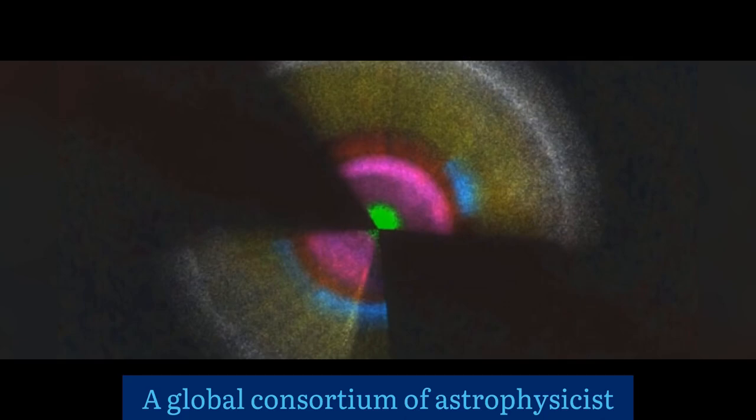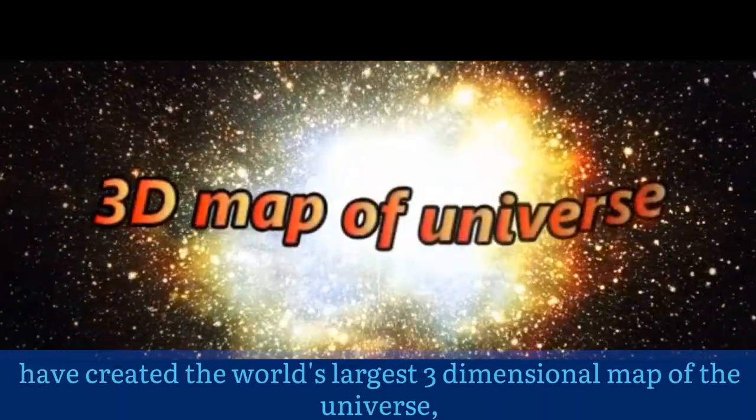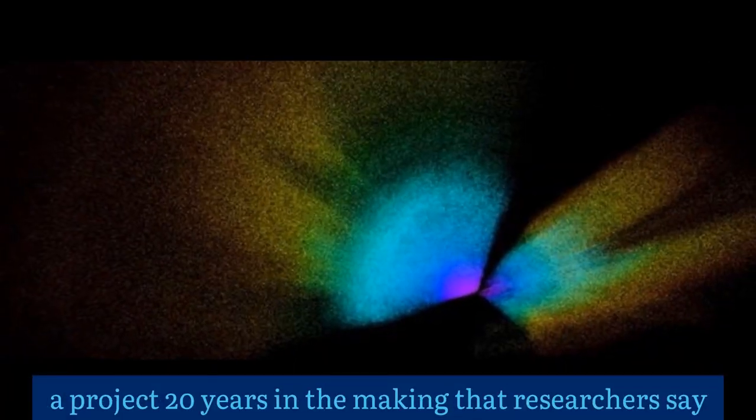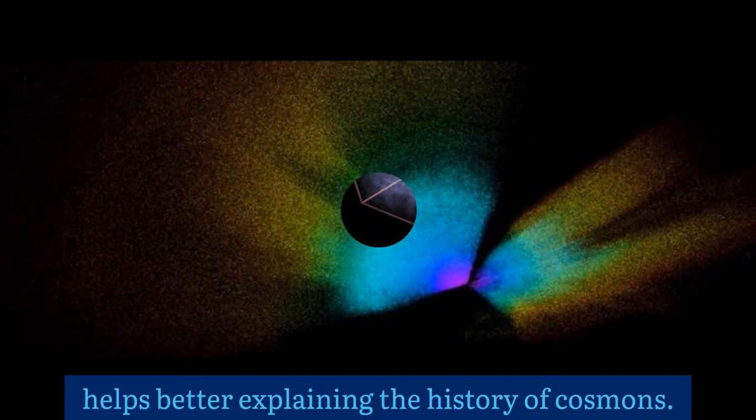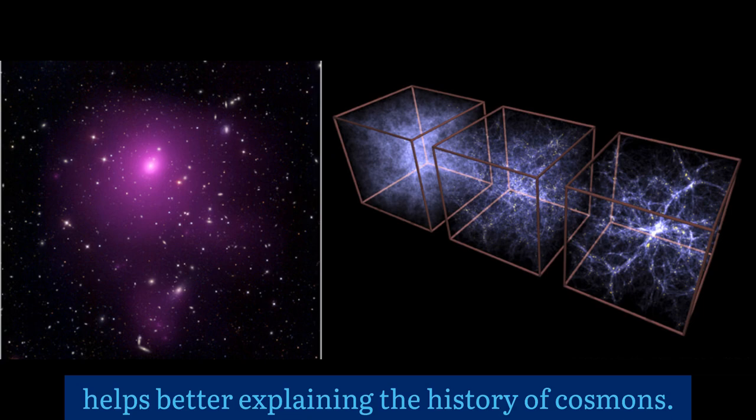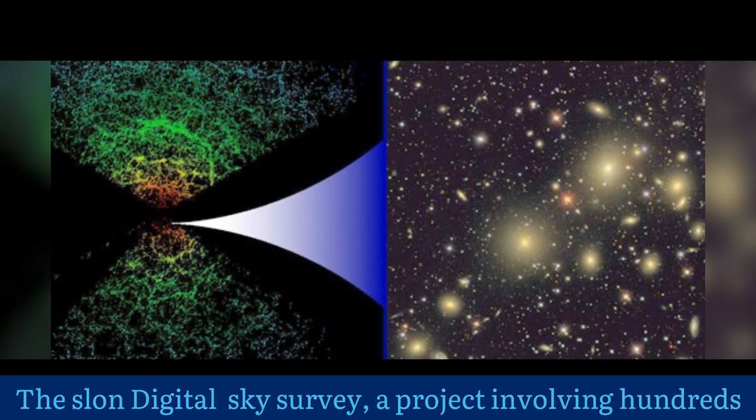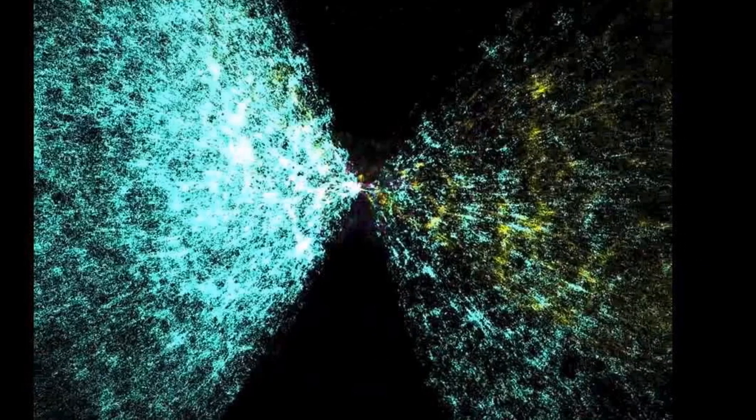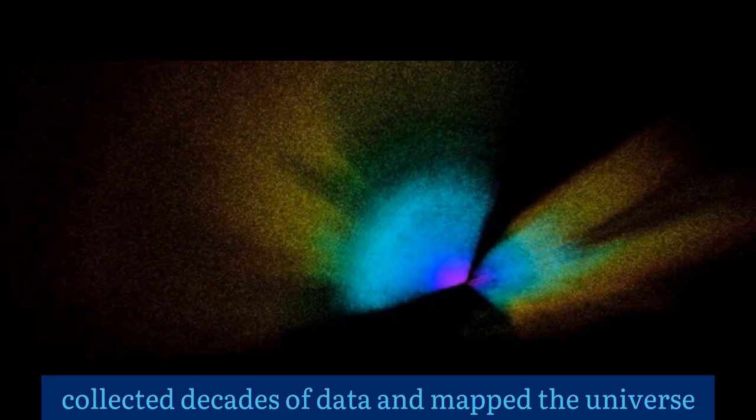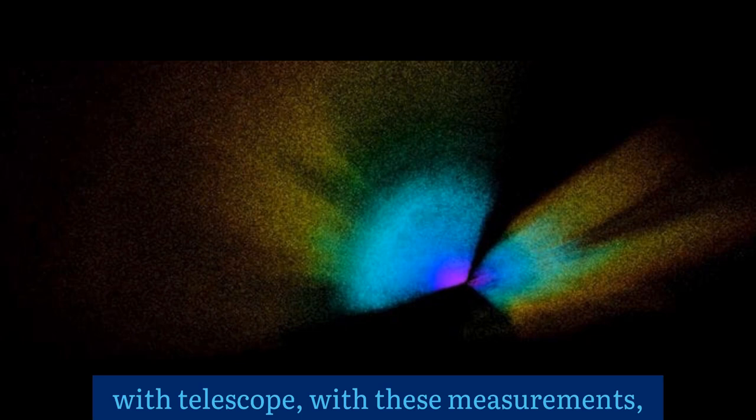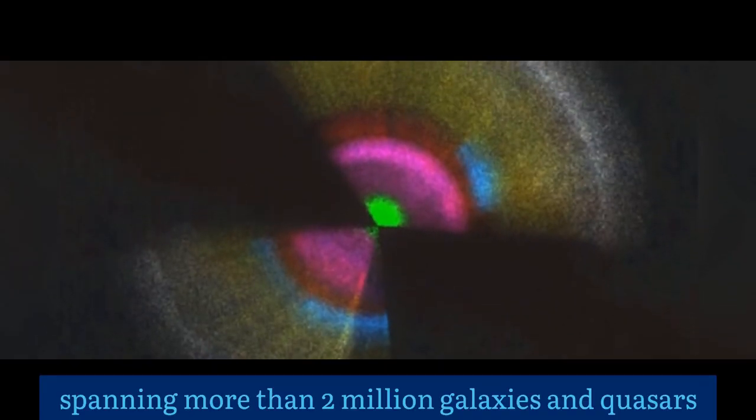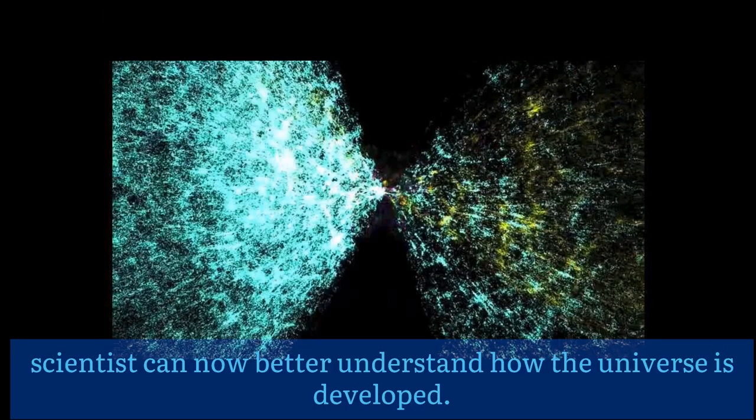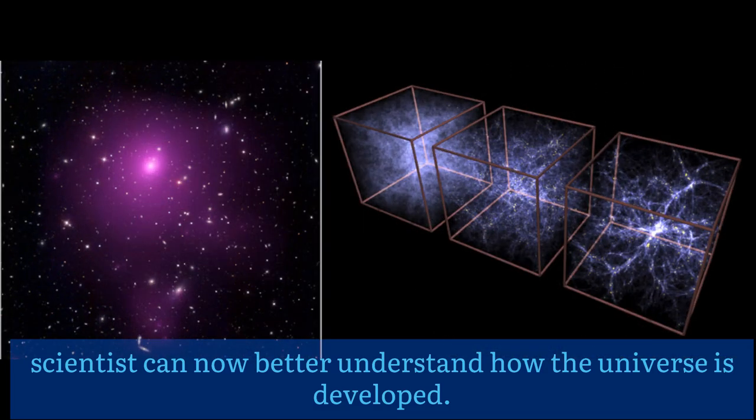A global consortium of astrophysicists have created the world's largest three-dimensional map of the universe, a project 20 years in the making that researchers say helps better explain the history of the cosmos. The Sloan Digital Sky Survey, a project involving hundreds of scientists at institutions worldwide, collected decades of data and mapped the universe with telescopes. With these measurements spanning more than 2 million galaxies and quasars formed over 11 billion years, scientists can now better understand how the universe developed.